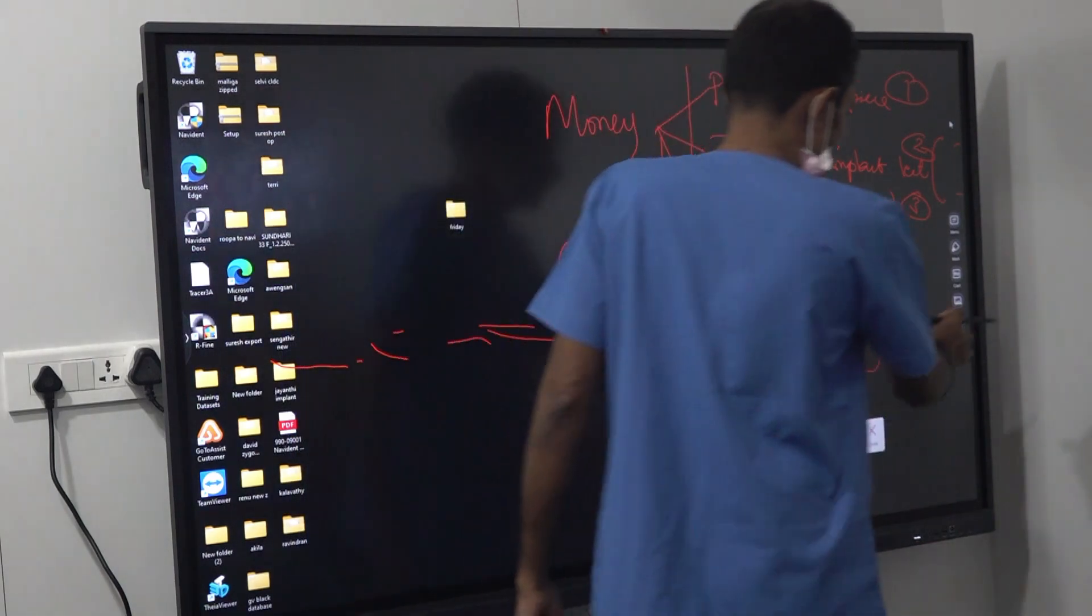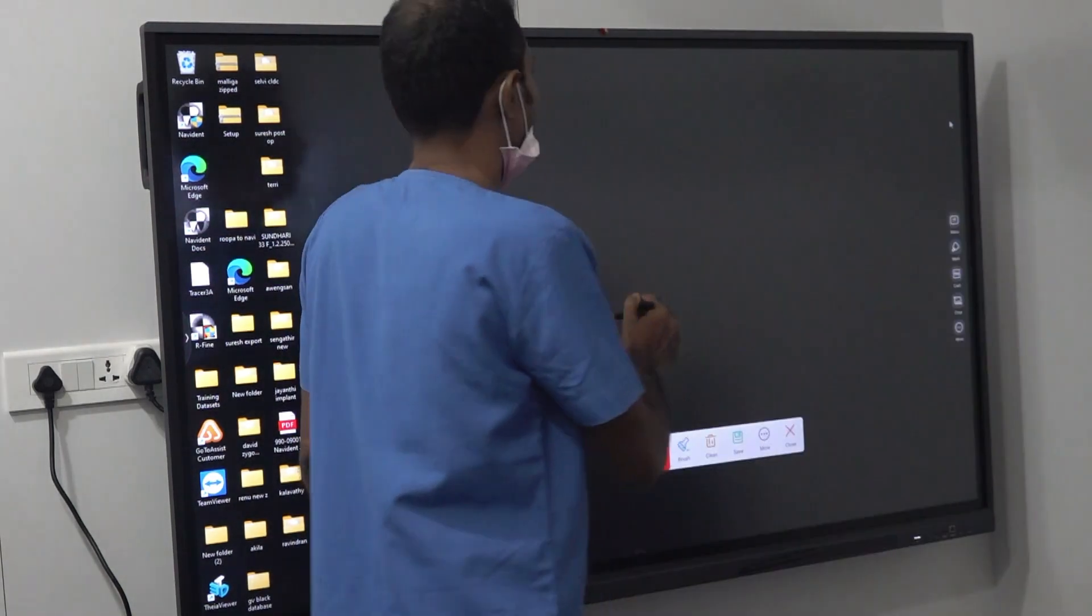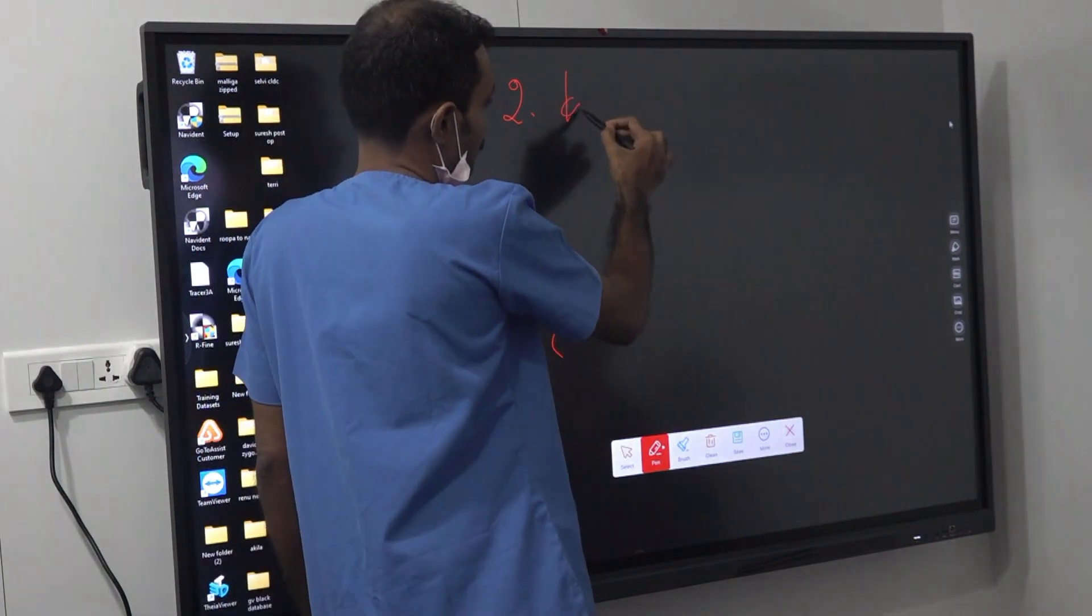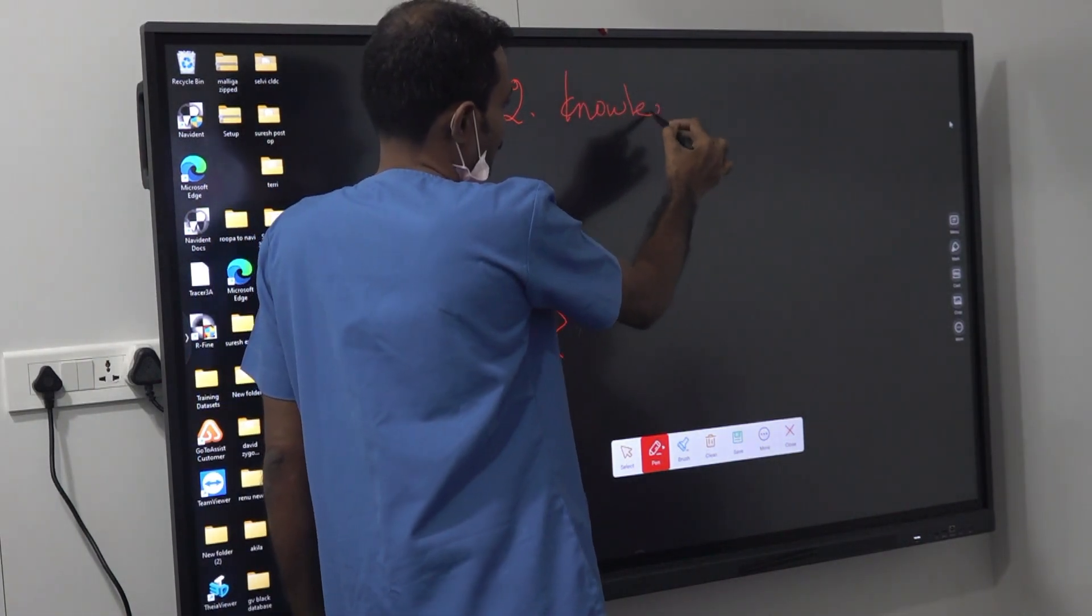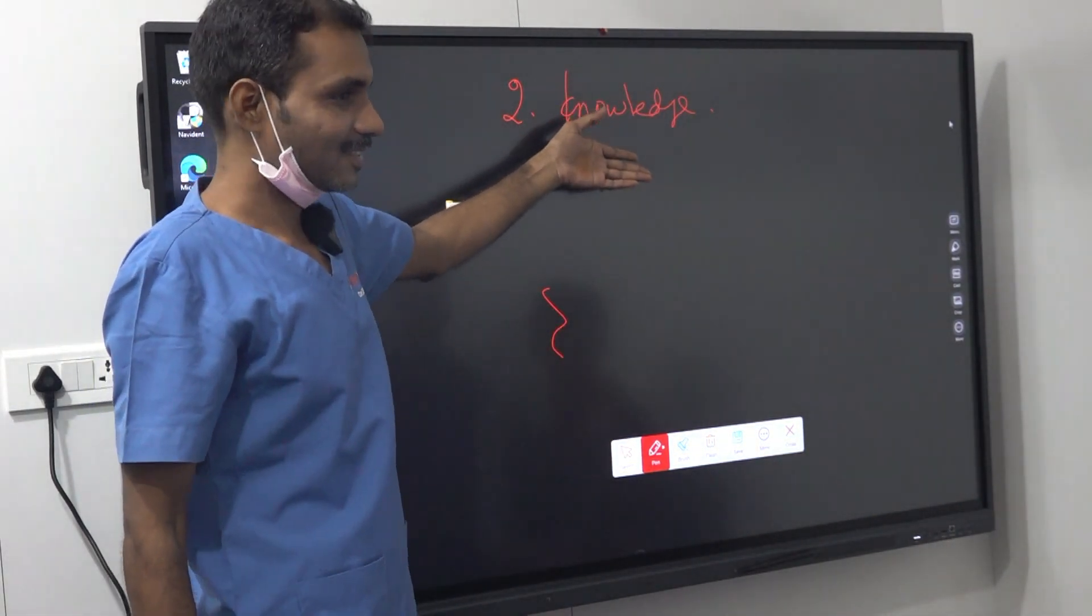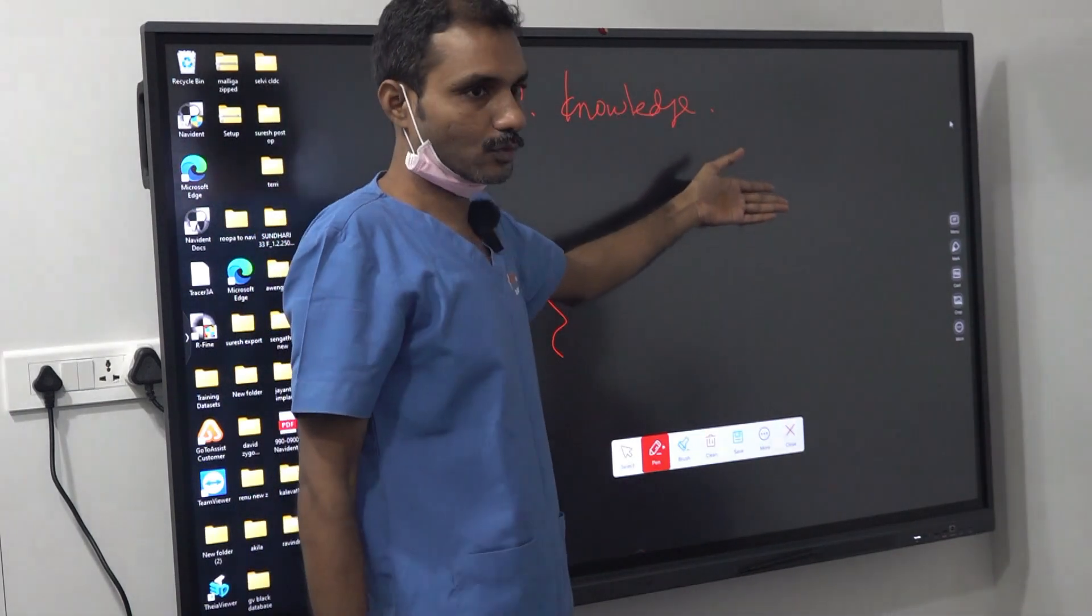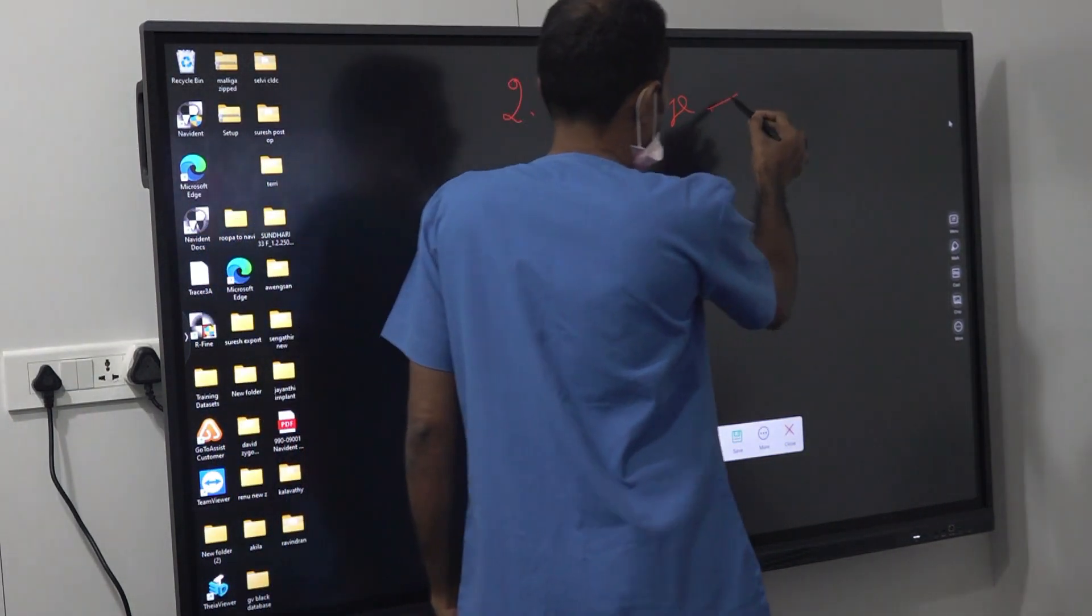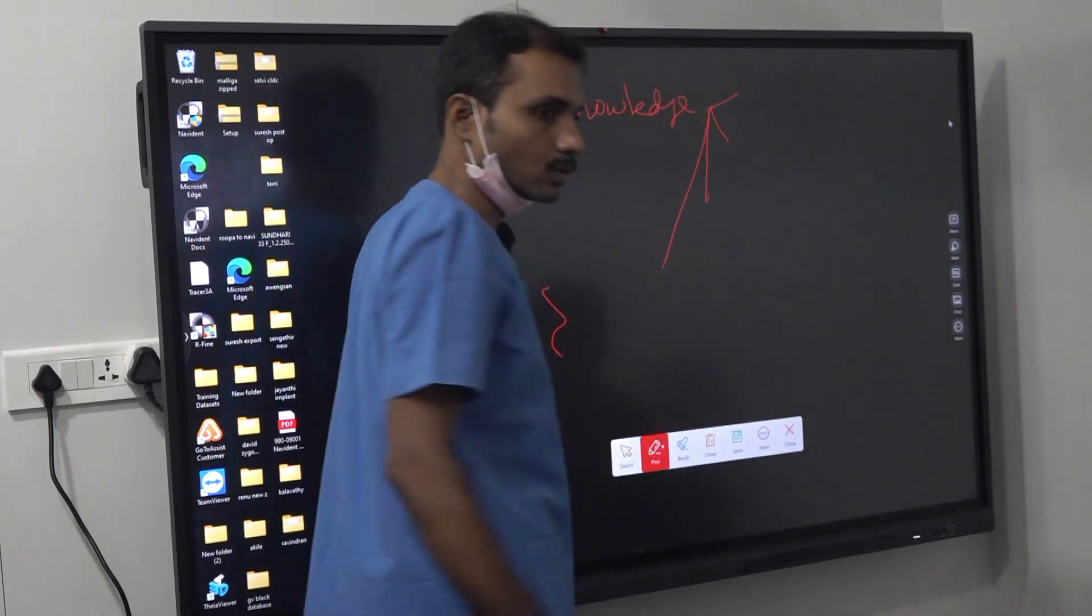So money part is this part. Second part is knowledge. The first part we cannot give, but the second part somewhat we can try to give in these three days. Of course, three days is not enough. In this one, we need to know.